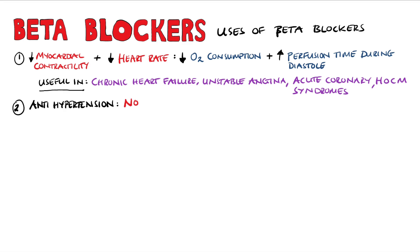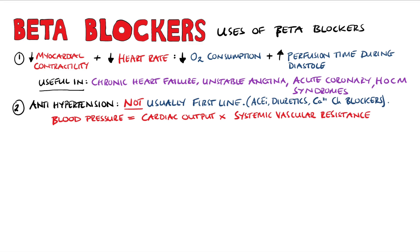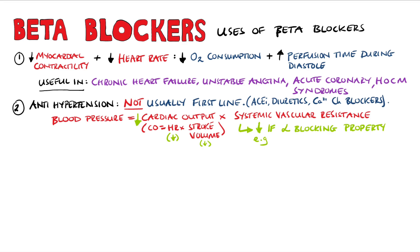Beta-blockers are also used as antihypertensive medications, but they are not usually first line — the first line is usually ACE inhibitors, diuretics, or calcium channel blockers. They are often used when patients have hypertension alongside something else, such as chronic heart failure. Blood pressure equals cardiac output multiplied by systemic vascular resistance, and cardiac output equals heart rate multiplied by stroke volume. The drop in blood pressure comes from decreased cardiac output due to decreased heart rate and lower contractility. If we use a beta-blocker with alpha-antagonizing properties, like labetalol, we also see a drop in systemic vascular resistance due to vasodilation. Labetalol is often used in hypertensive emergencies, as it acts quickly and is safe to use in pregnancy.